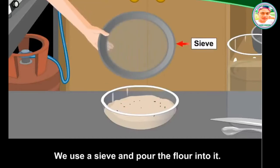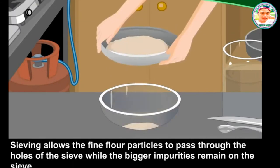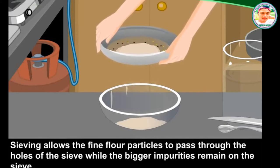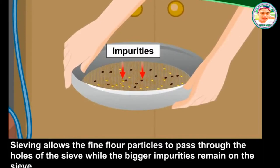We use a sieve and pour the flour into it. Sieving allows the fine flour particles to pass through the holes in the sieve while the bigger impurities remain on the sieve.